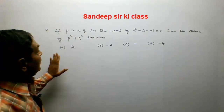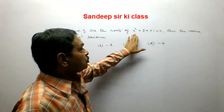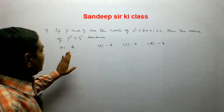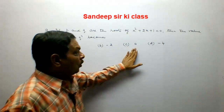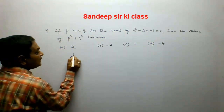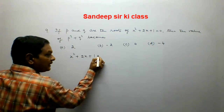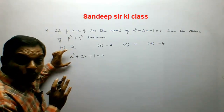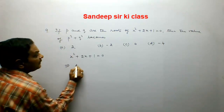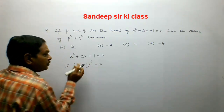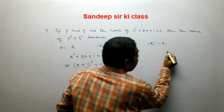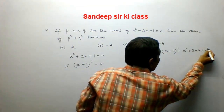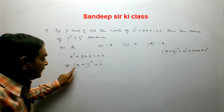Question number 9. If p and q are the roots of x² + 2x + 1 = 0, find p² + q². Options are 2, -2, 4, or -4. The equation x² + 2x + 1 = 0 can be written as (x+1)² = 0, using the identity (a+b)² = a² + 2ab + b².